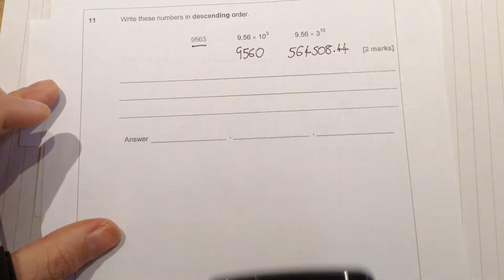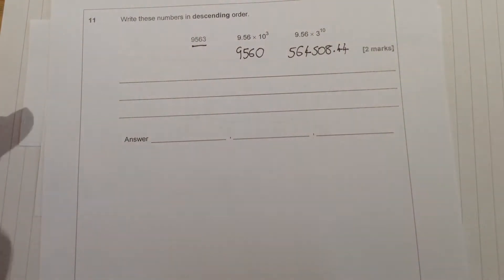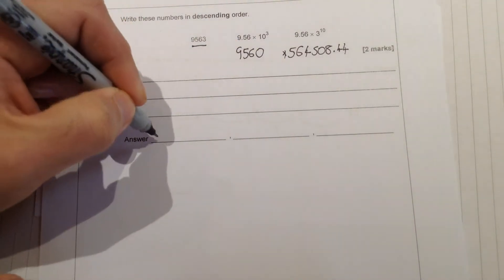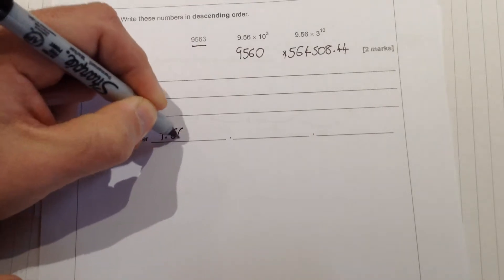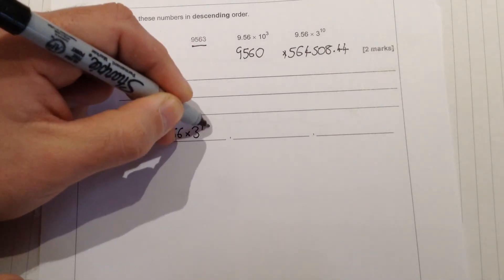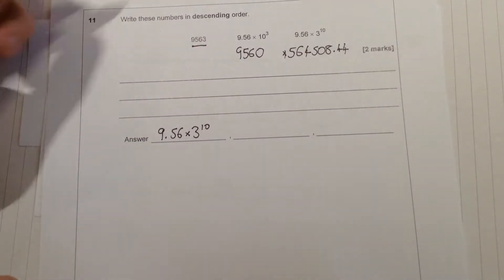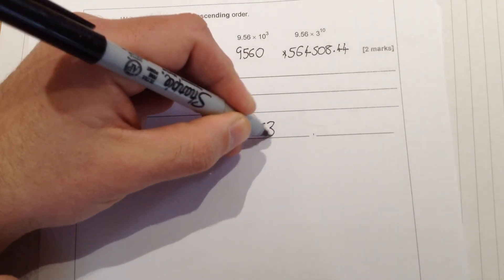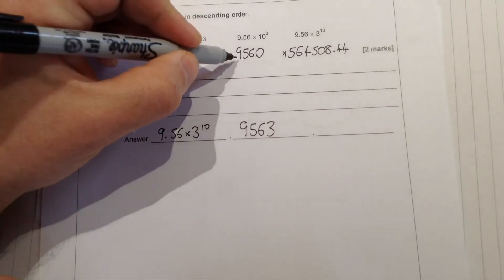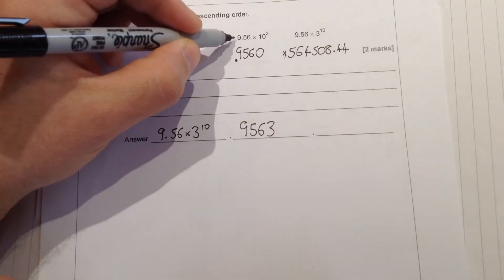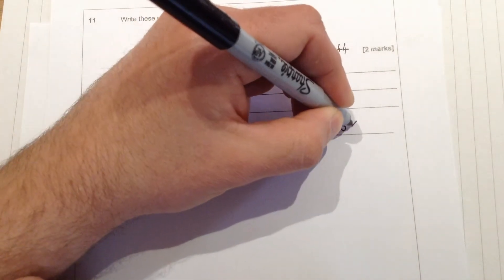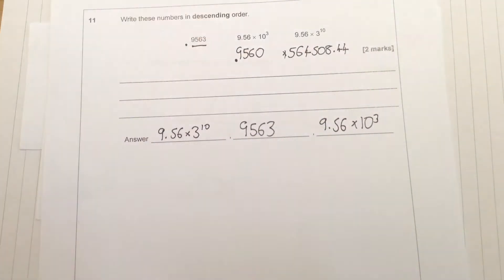So because it wants the numbers written in descending order, that means biggest down to the smallest. We would get this one is the largest, so 9.56 times 3 to the power of 10, 9563 is the next going down from biggest to smallest, and this is the smallest one, so we use the number that we were given, 9.56 times 10 to the power of 3.